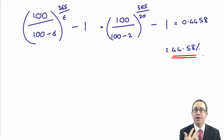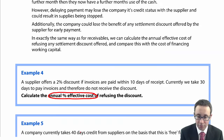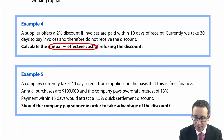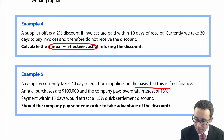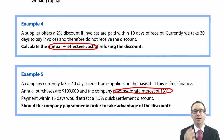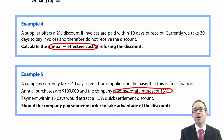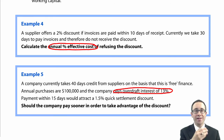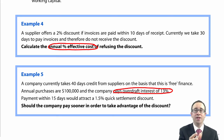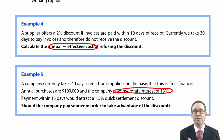We should refuse the discount in that case. The next example asks: should the company pay sooner to take advantage of the discount? The company pays overdraft interest of 13%. We could pay the invoice quicker by taking advantage of the discount, but we need to work out the cost of doing that compared to that 13%. If it is cheaper to take the discount — less than 13% — take it. But if it's greater than 13%, keep the cash within the business and borrow at the cheaper rate.